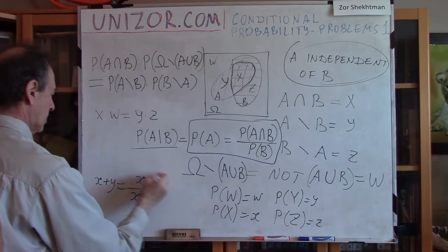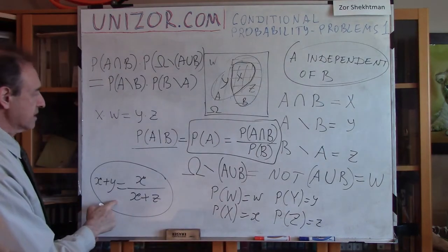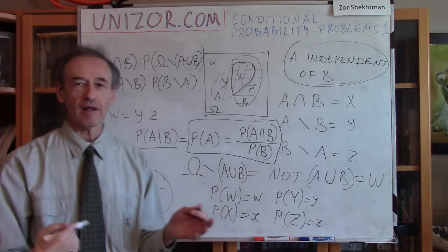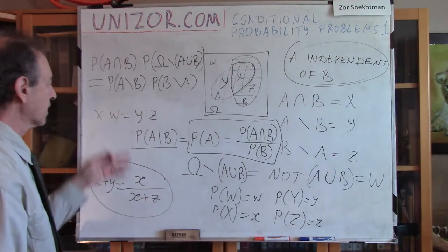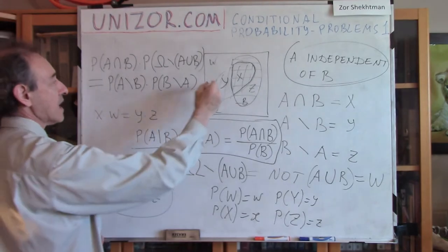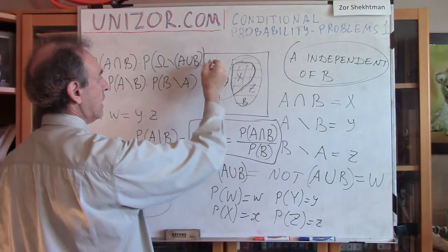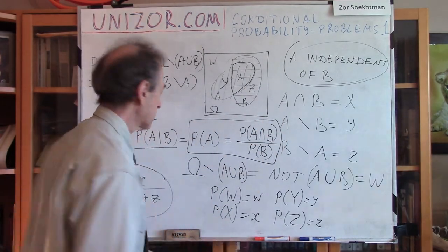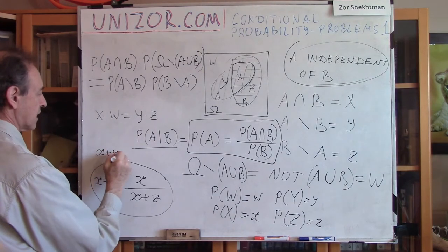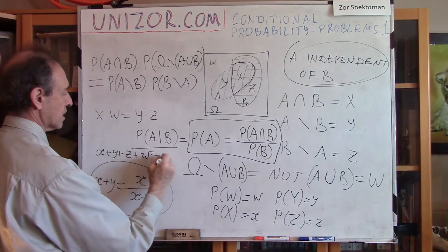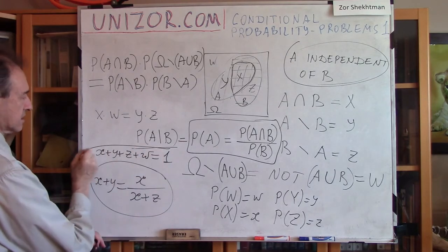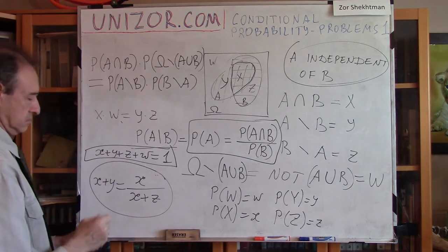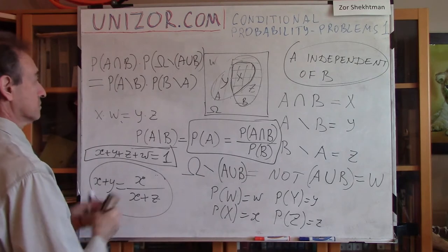This is given, and this — that x times w equals y times z — we have to prove. It becomes a plain algebraic exercise: how from one formula can we get to another. Let's not forget that the sum of all probabilities x plus y plus z plus w equals one — the probability of the entire sample space. So this condition plus this condition must result in x times w equals y times z.